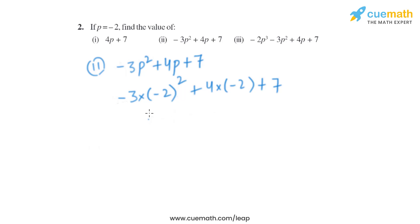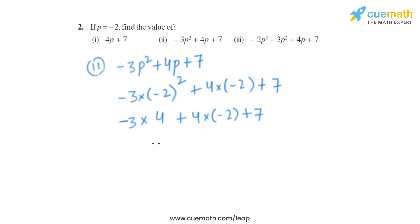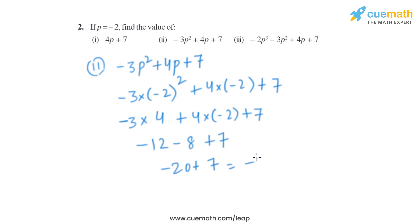Now minus 2 squared is minus 2 into minus 2, which equals plus 4. So it becomes minus 3 into 4, plus 4 into minus 2, plus 7. After multiplying, we get minus 12 minus 8 plus 7. Minus 12 and minus 8 is minus 20, and plus 7 gives us minus 13.